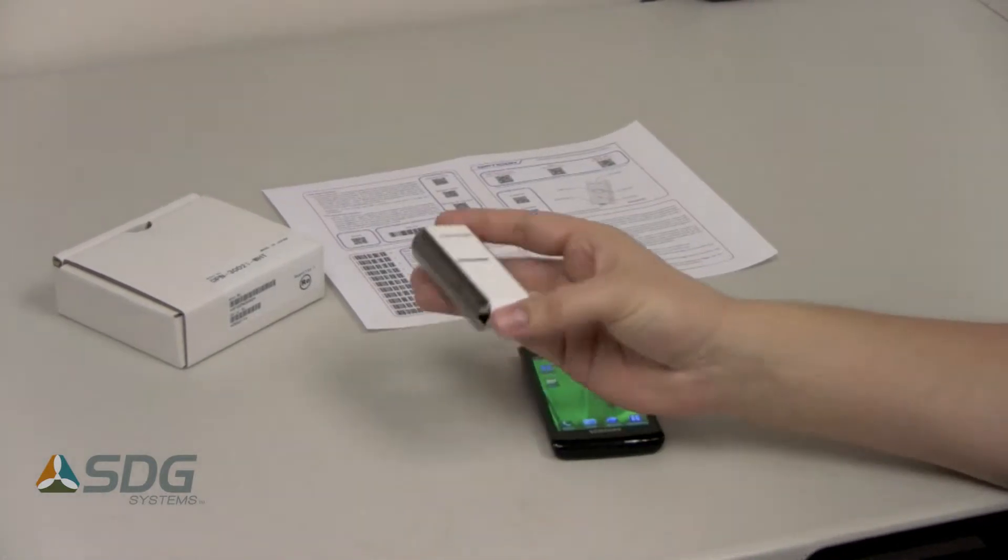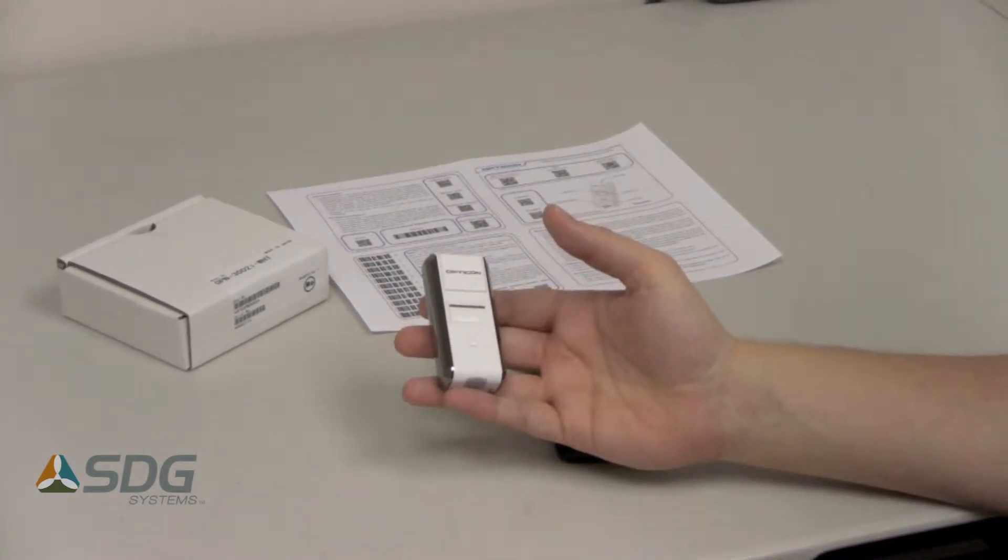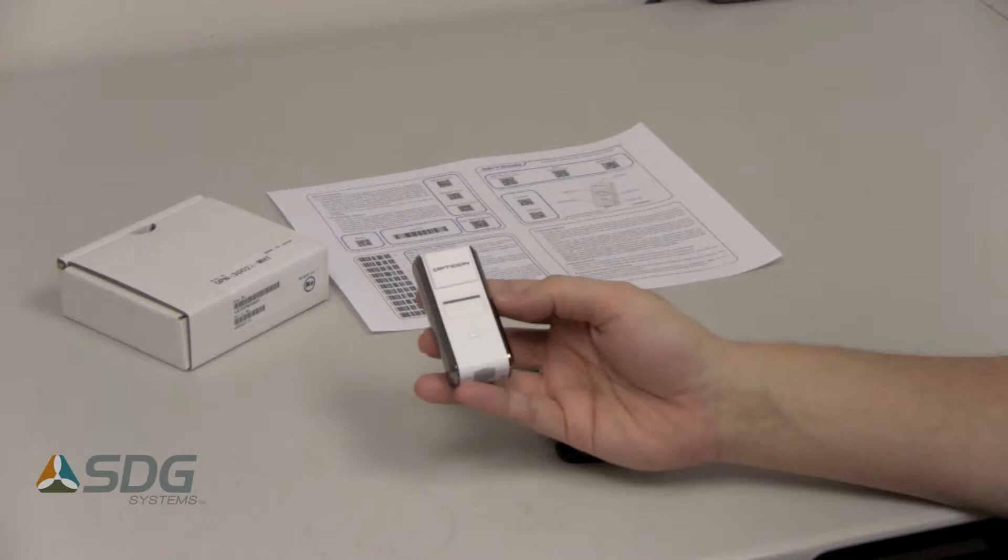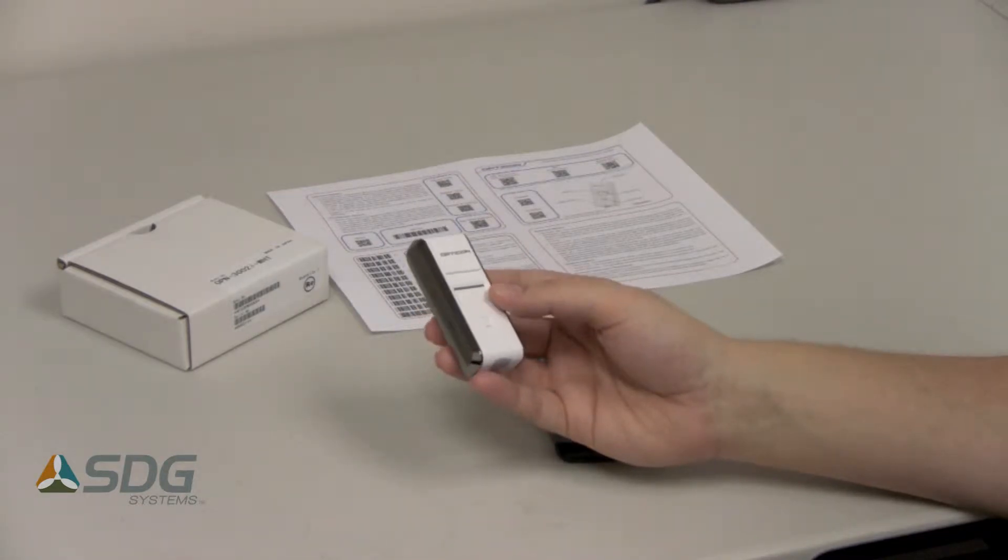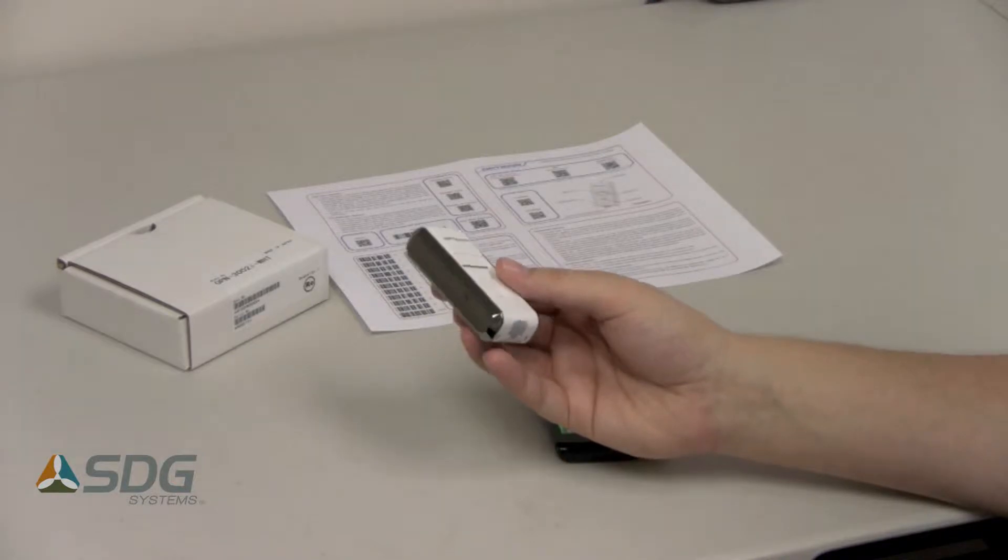Today I'll be showing you the Opticon OPN3002i Bluetooth Barcode Scanner. It's a real easy way to add native barcode scanning capability to your Android smartphone, iOS device, or Mac or PC computer.